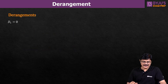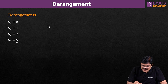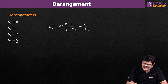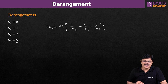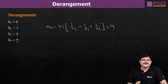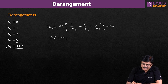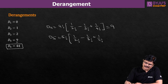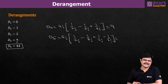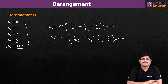So d1 is 0, d2 is 1, d3 is 2 — what is d4? d4 is 9. Just use the formula: 4 factorial times (1/2! minus 1/3! plus 1/4!). Simplify to get 9. And d5 is 44. You can derive this using 5 factorial times (1/2! minus 1/3! plus 1/4! minus 1/5!). One should at least remember the first five values of dn.